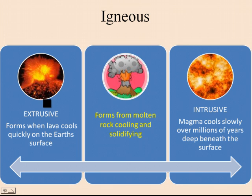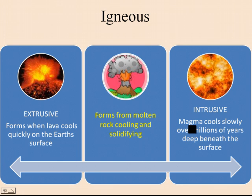Igneous. There are two types of igneous rocks. Extrusive — this forms when lava cools quickly on the Earth's surface, basically after a volcano. And there is intrusive. Intrusive igneous rocks form when magma cools over millions of years, basically magma that stays in a pocket under the Earth and slowly cools. The difference would be the size of the crystals that comes from that.